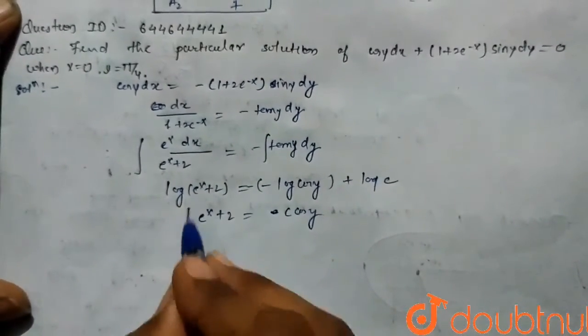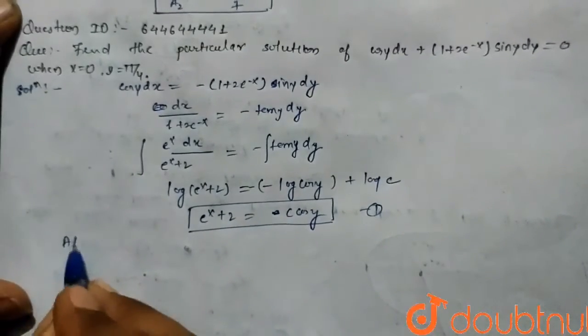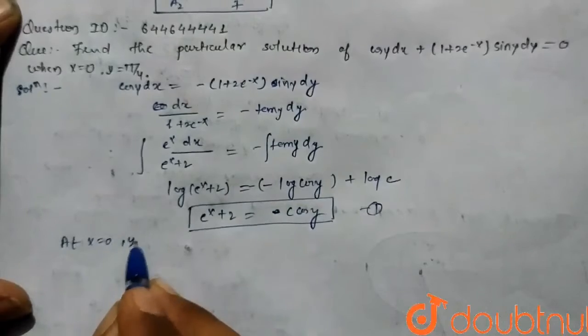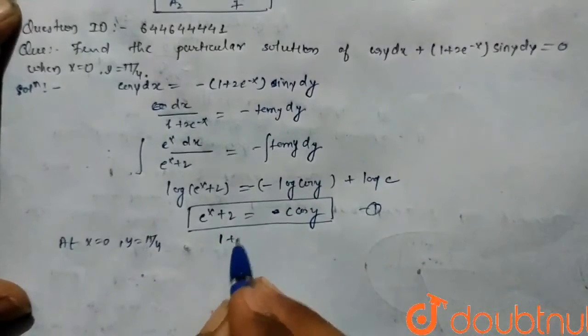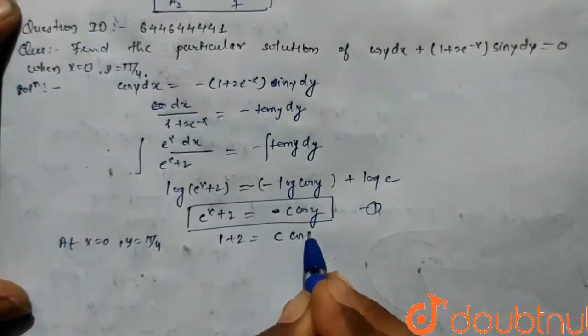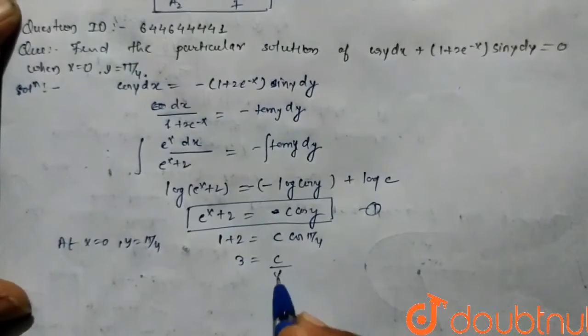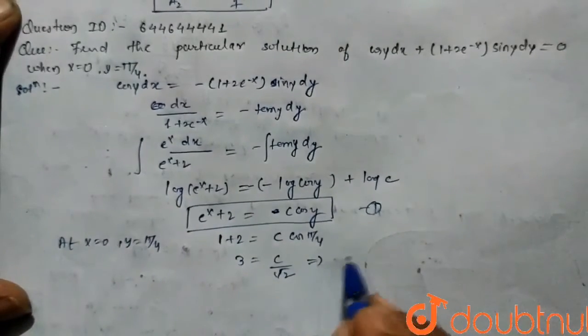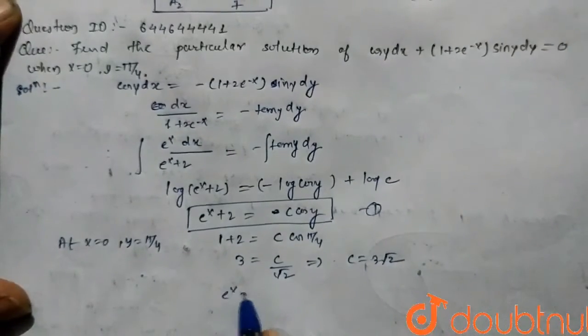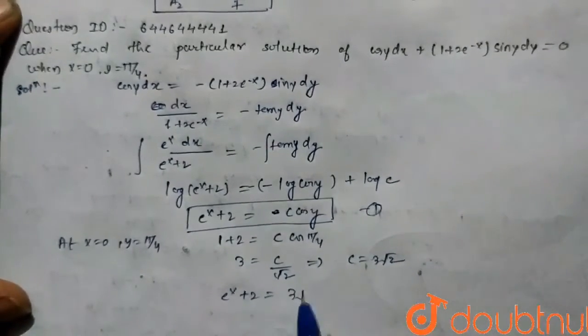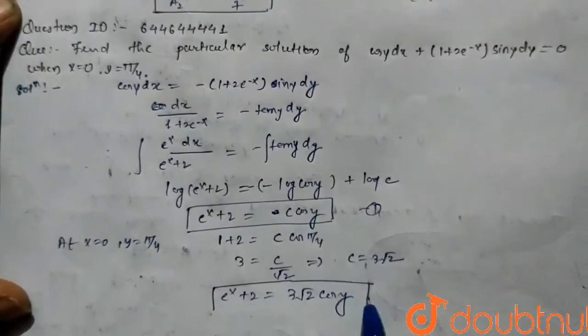Here this is our required equation. At x equals 0, y equals pi by 4, so on putting x equals 0, it becomes 1 plus 2 equals c cos pi by 4. So 3 is c by root 2, so the value of c is 3 root 2. So here e to the power x plus 2 is equals to 3 root 2 cos y.